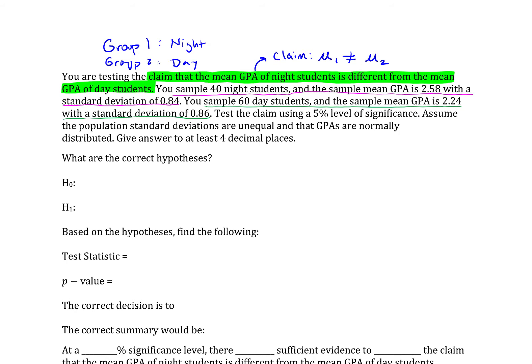So let's get started in this process. We have a claim and we want to turn it into a hypothesis. In order to turn a claim into a hypothesis, I need to decide if there is a statement of equality in that claim. And the not equal to is definitely not a statement of equality. So that will go in the alternative hypothesis. And I'll just mark that as the claim. The null then is going to be the complement, which is that they are equal to one another. Based on the hypothesis, find the following. So the test statistic and the p-value.